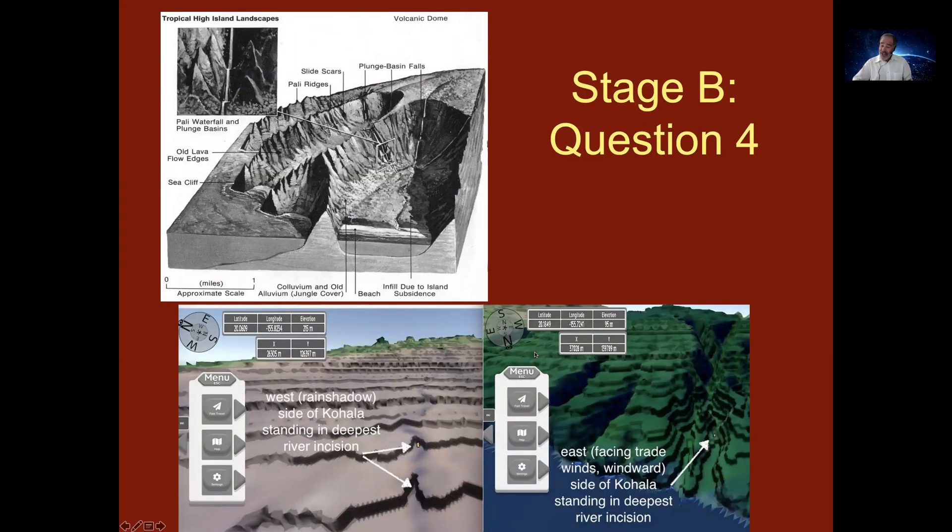The essence of stage B is for you to explore the contrasts of the Hualalai volcano with respect to the rivers that are being incised into the volcano. The Hualalai volcano is about a million years old, so it's old enough for the processes of river incision to begin to occur.